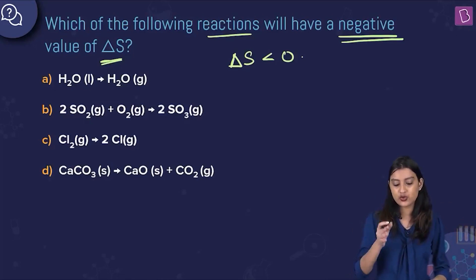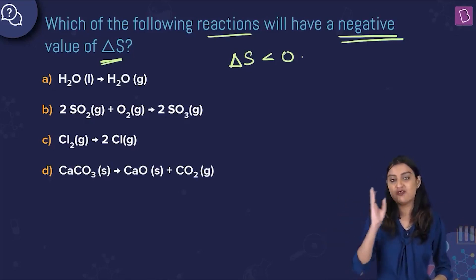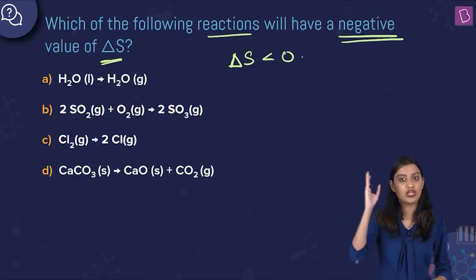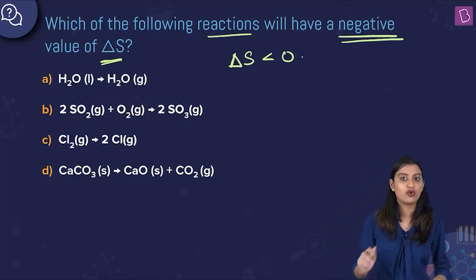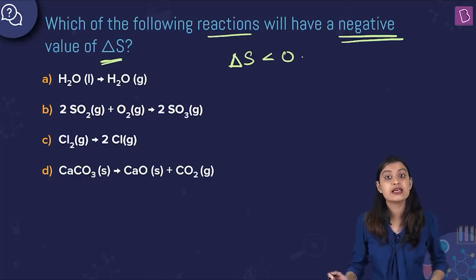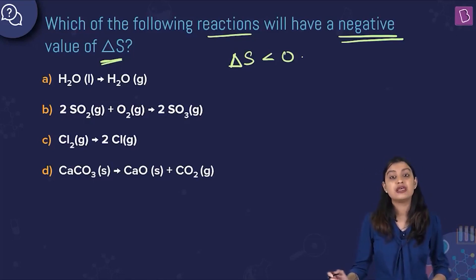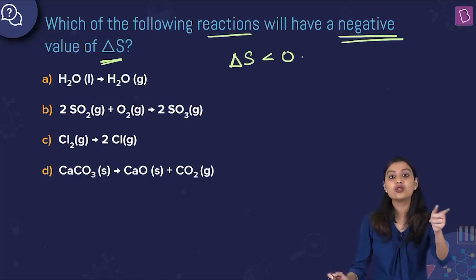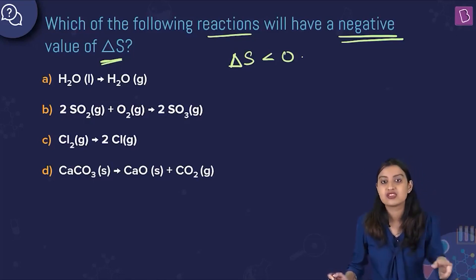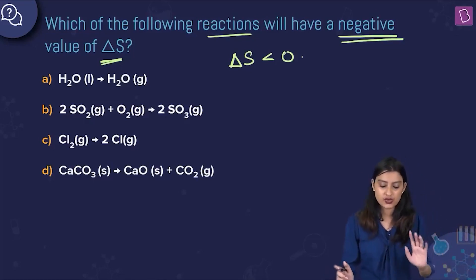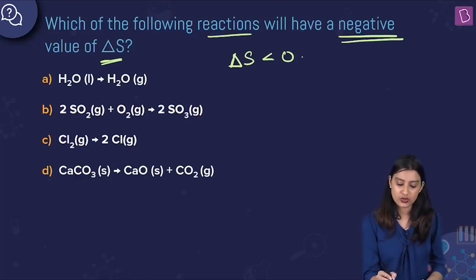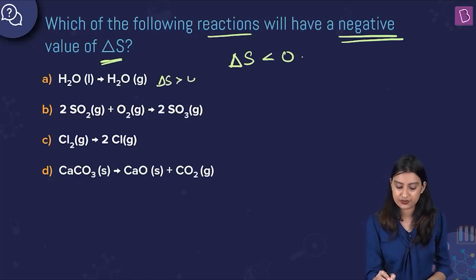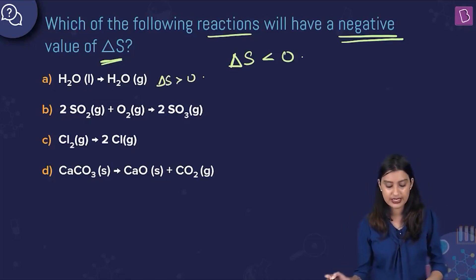Option A: H2O liquid gives you H2O gas — 1 mole of liquid giving 1 mole of gas. Entropy is going to increase because it went from liquid state to gaseous state; gases have more entropy. So delta S is greater than 0.